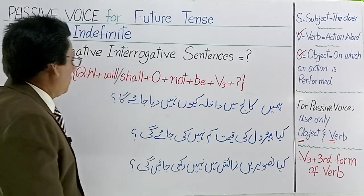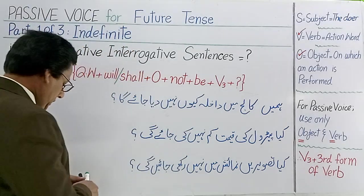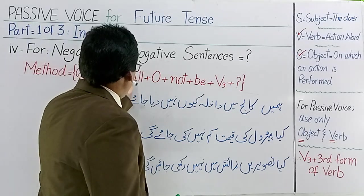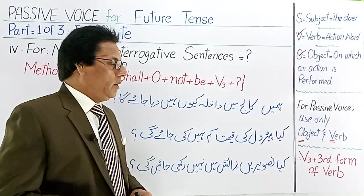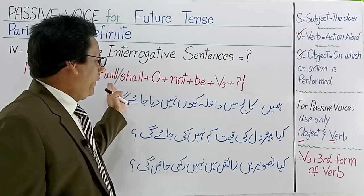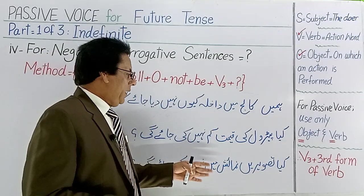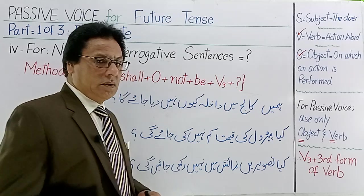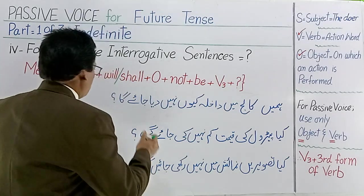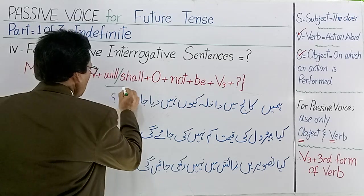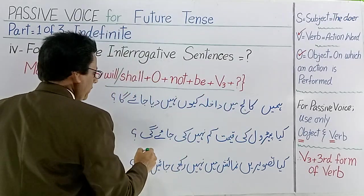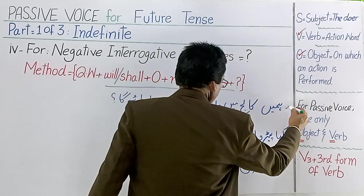تو اب یہاں پہ ایک چیز special میں آپ کو بتانا چاہتا ہوں کہ اس سے پہلی جو کلاس ہے، ہم نے صرف interrogative والی — اس میں ہم نے یہ questioning words use کی ہیں۔ یہاں پہ especially ہم نے آپ کے لیے variety of sentences رکھی، جس میں will اور shall کو focus کیا۔ اور یہی فارم ہم use کریں گے ان تینوں کے لیے۔